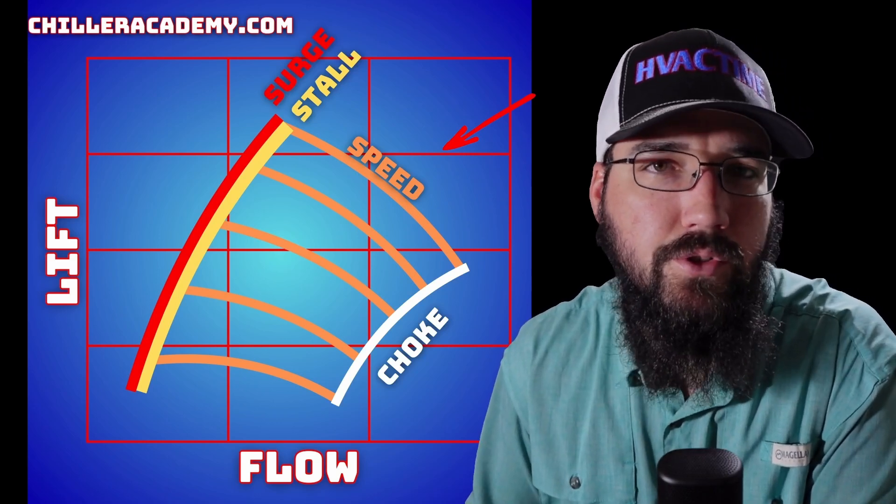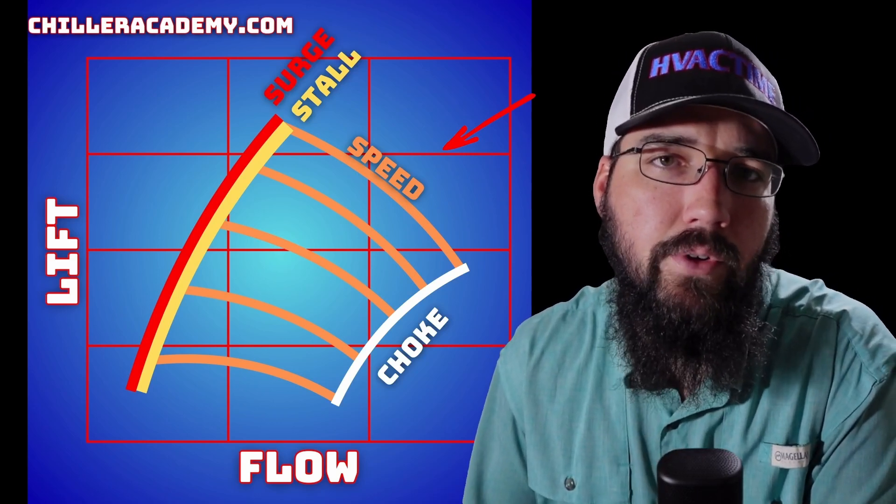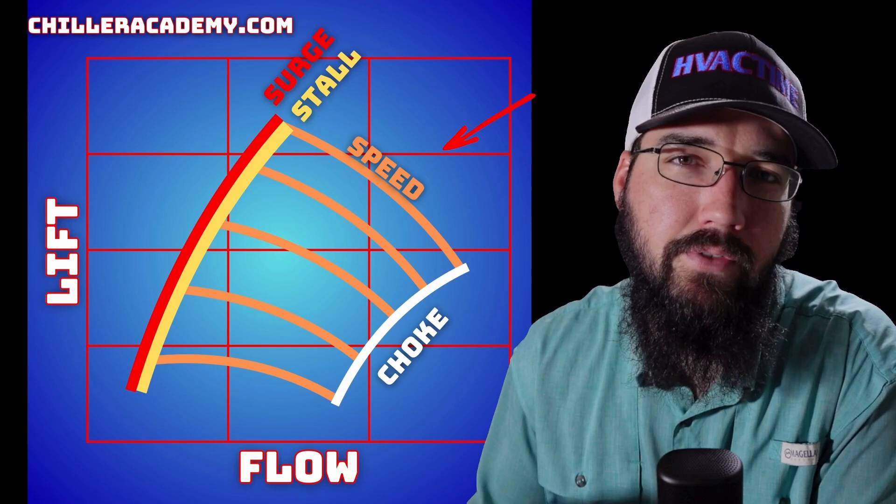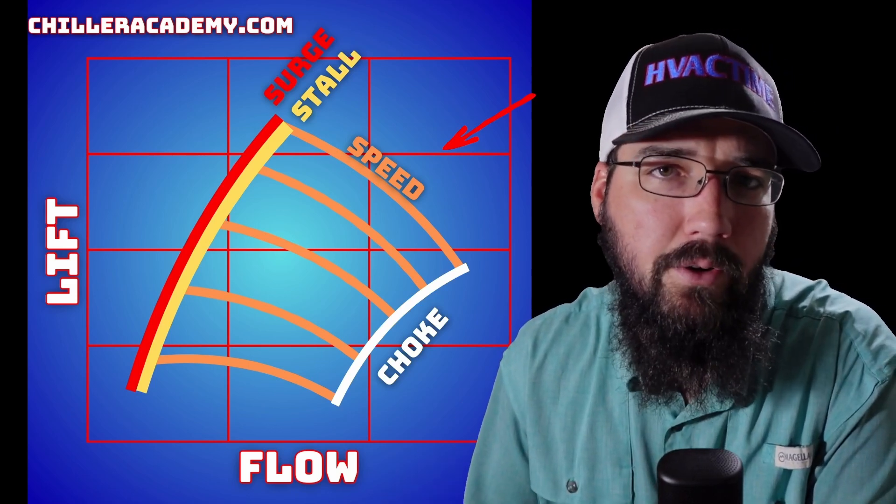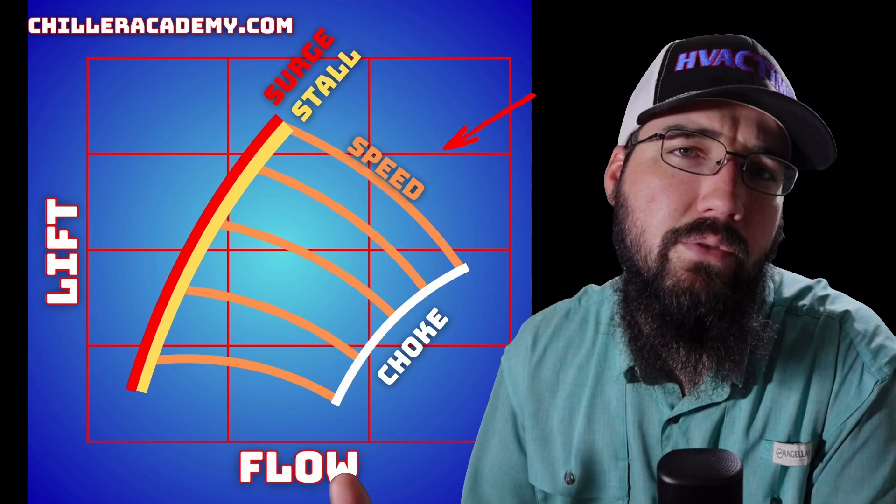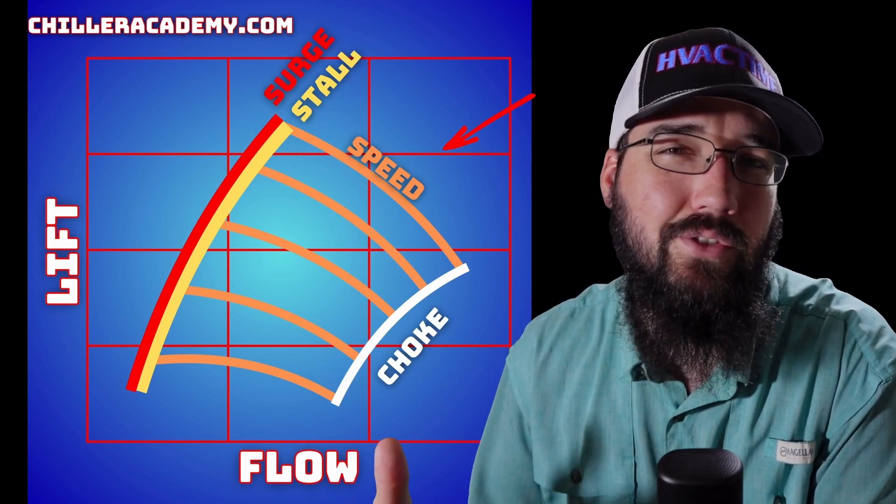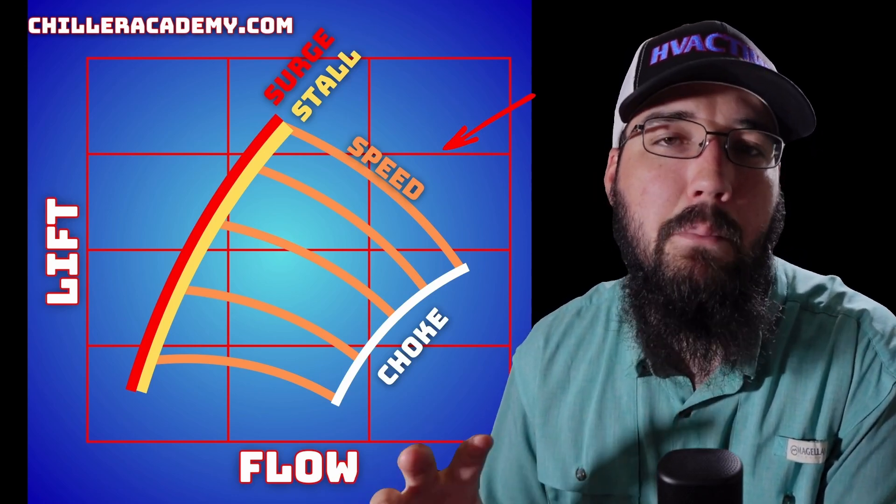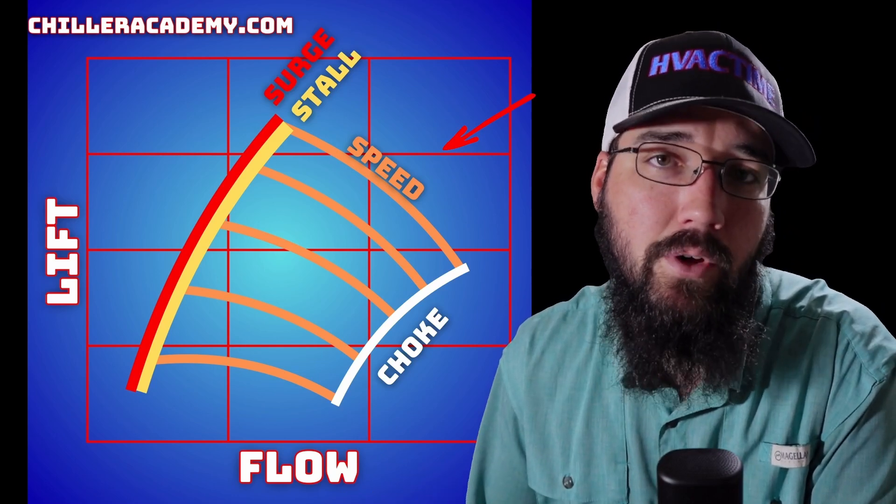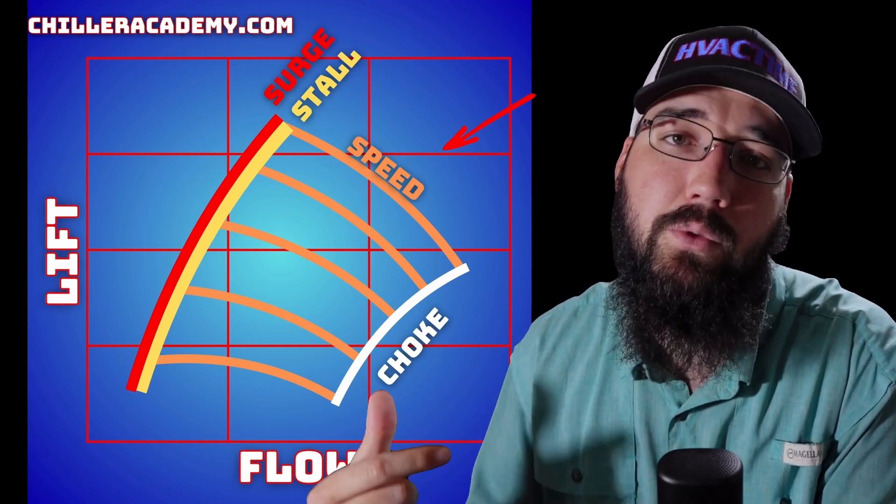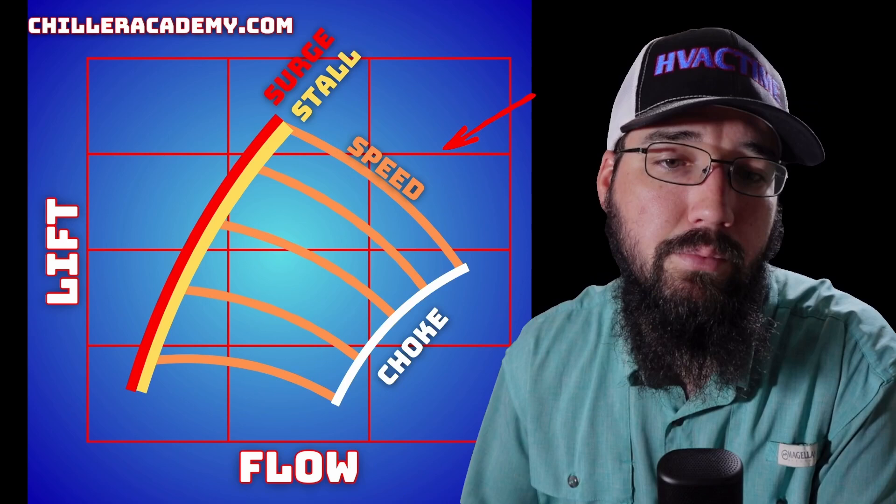This is a centrifugal surge graph, and similar to a centrifugal water pump flow graph where we can see the optimum flow and horsepower requirements, every centrifugal compressor also has a surge graph. It's how we can monitor where the surge point is, or where we are in relation to that point based on our lift—the difference between condenser pressure and evaporator pressure.